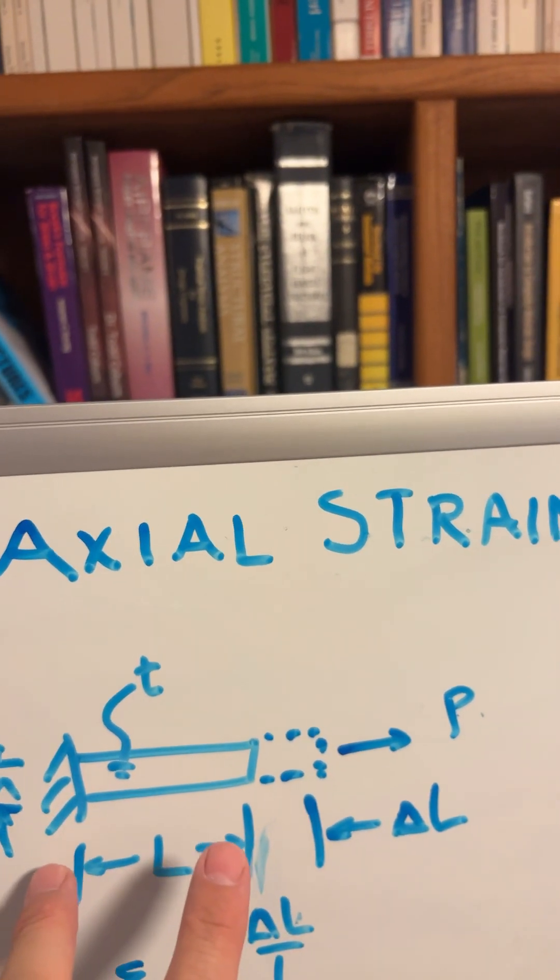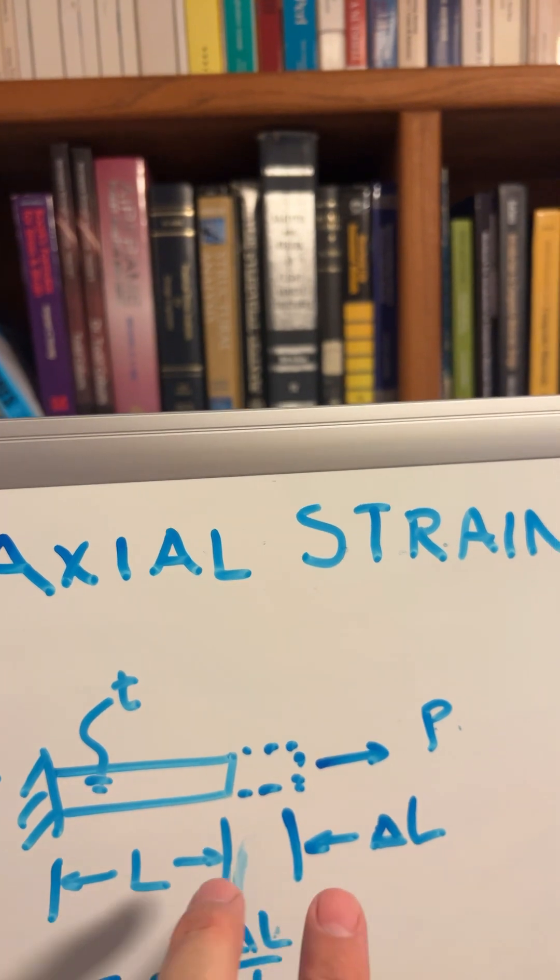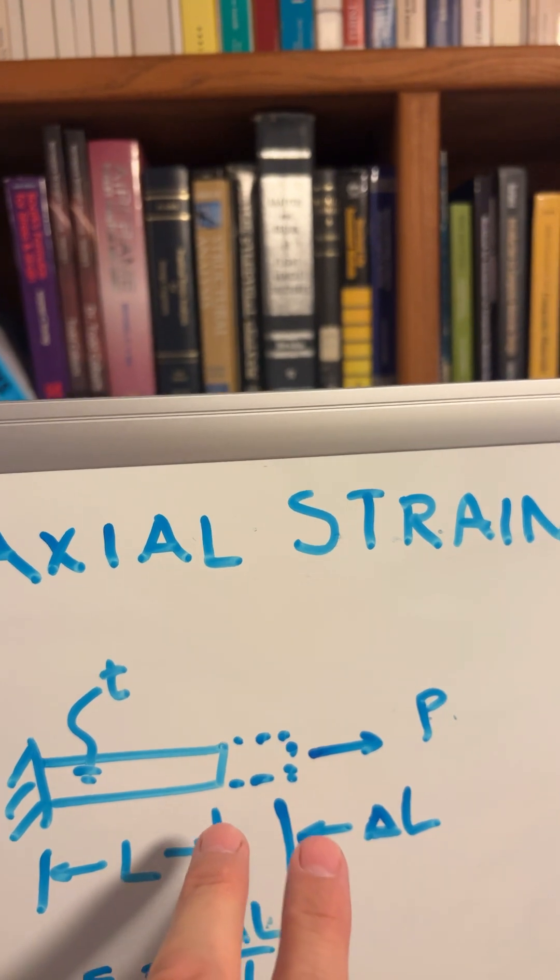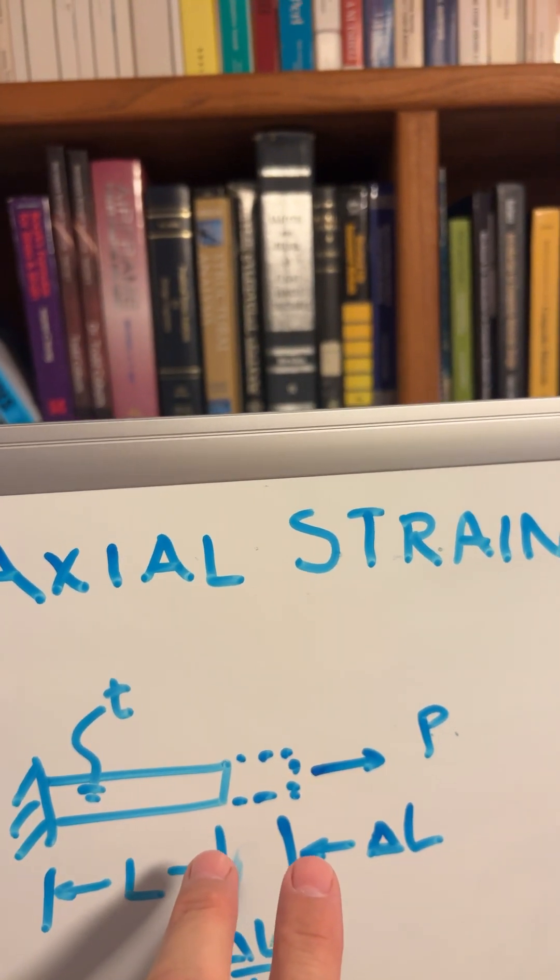You'll notice its original length was L, and it gets longer by a dimension delta L. The strain is that change in original length, delta L,